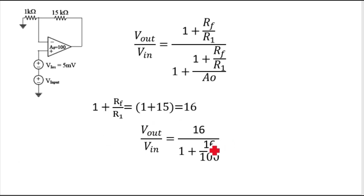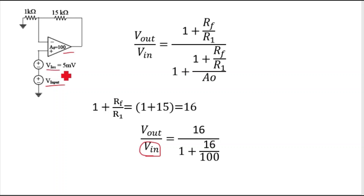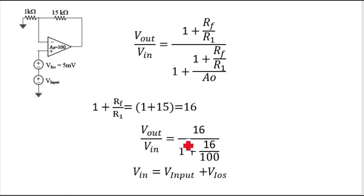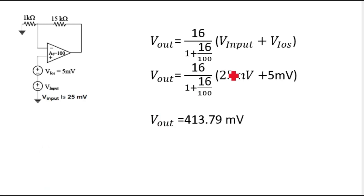Putting this value into the expression: 1 plus RF by R is 16, and A naught is 100, so the denominator becomes 1 plus 16 by 100. The effective V in is V input plus VIOS, which is 25 millivolt plus 5 millivolt equals 30 millivolt.